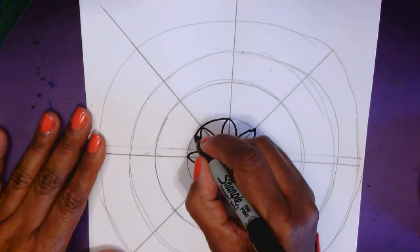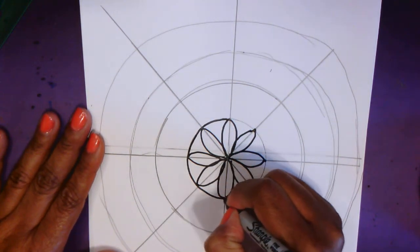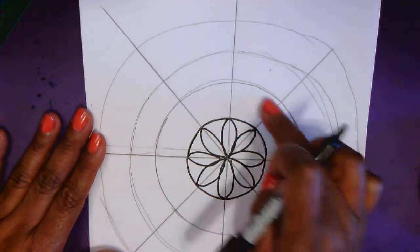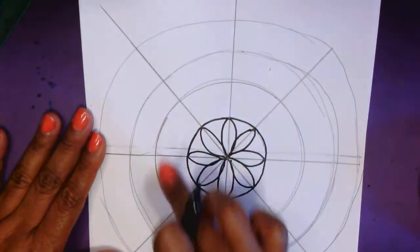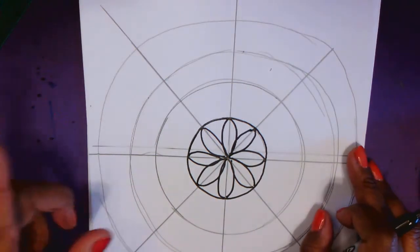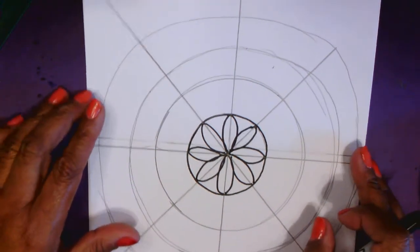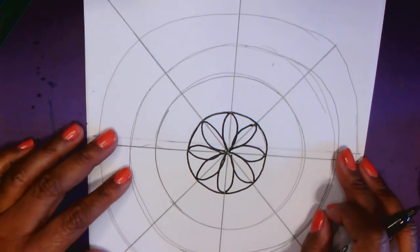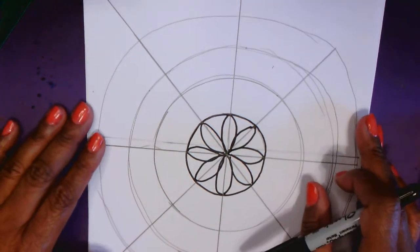So I'm going to trace the lines I want to keep. I want to keep this line. So I'm tracing it. So now we have another level of our mandala. And remember we're just using shapes for this mandala. So what would be a good shape to go next? You get to decide for your mandala.